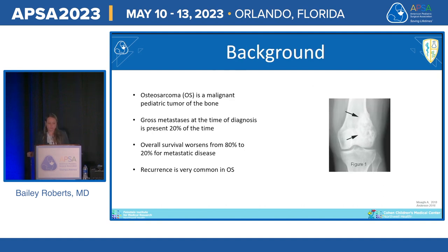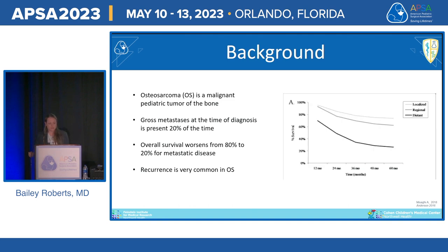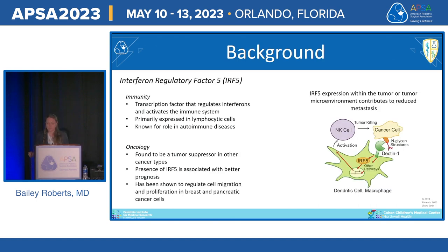Osteosarcoma is a malignant pediatric tumor of the bone. Gross metastasis at diagnosis is present 20% of the time, most commonly to the lung. Overall survival worsens from 80% to 20% for metastatic disease, and recurrence — also most likely in the lungs — is very common. Interferon regulatory factor 5, or IRF-5, is a transcription factor that regulates interferons and activates the immune system. It is a known tumor suppressor in many cancer types, with its presence associated with better prognosis in breast, colorectal, pancreatic, and gastric cancers, and it reduces metastasis in the tumor microenvironment. Understanding its role in osteosarcoma is important for prognosis and potential immunotherapeutic options.